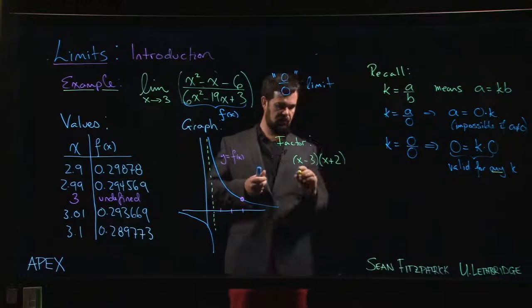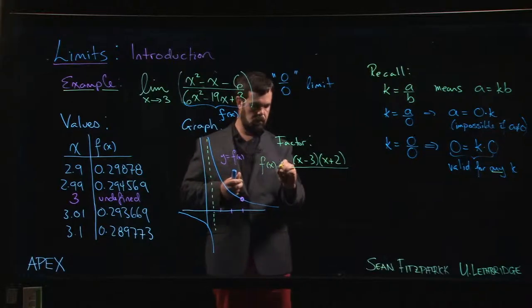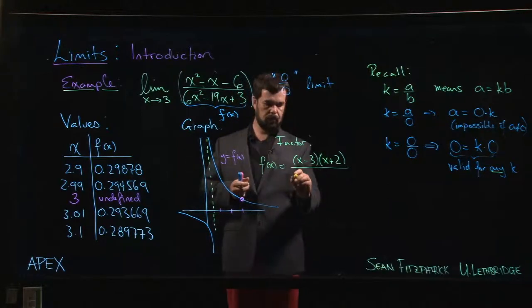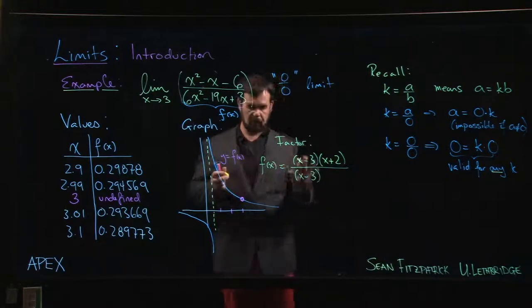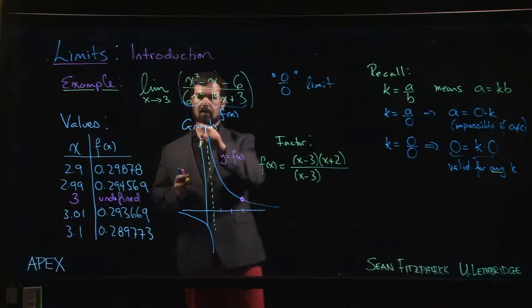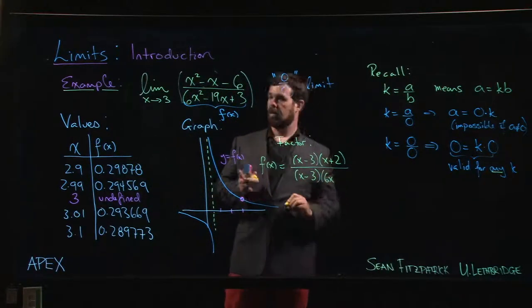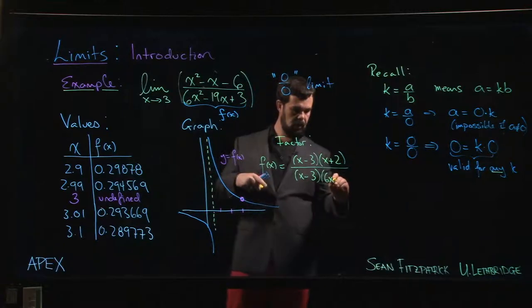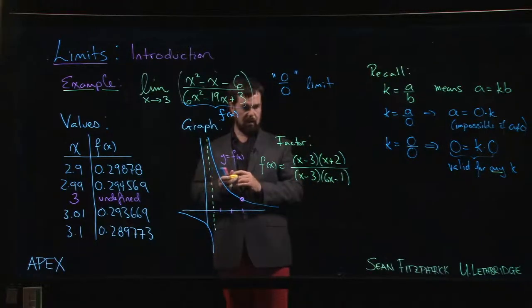On the bottom, again because we get zero when we plug in x equals three, we expect that x minus three is a factor. So the other term, it's going to have to start with a 6x and it's going to have to end with a one. You can work out that this gives you the right result.